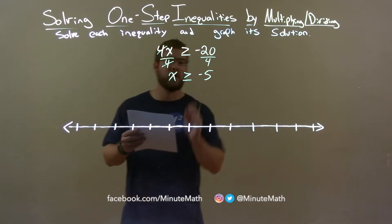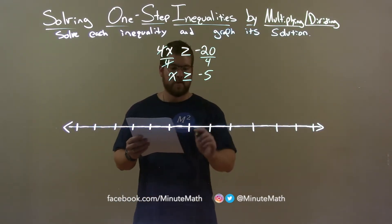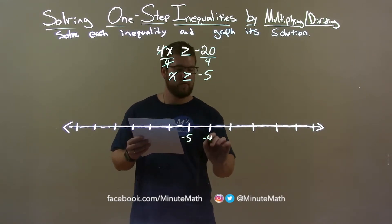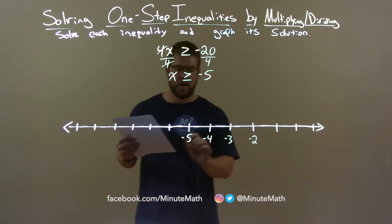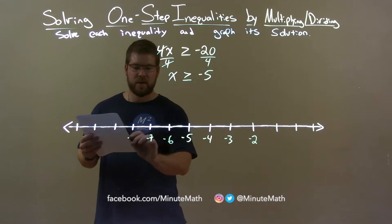Alright, so if x is greater than or equal to negative 5, we need to graph it. So, put negative 5 here, negative 4, negative 3, negative 2, and negative 6, negative 7, negative 8.